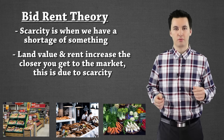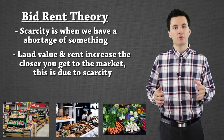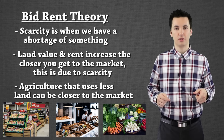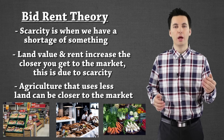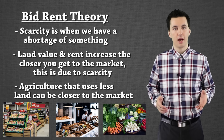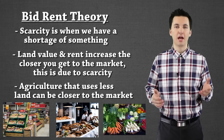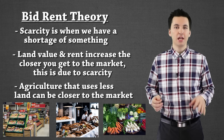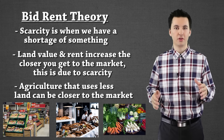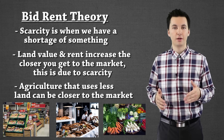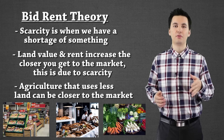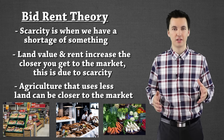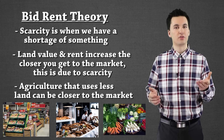Looking at that first ring of Von Thunen's model — dairy production — that doesn't require as much land, so they're able to buy more expensive land and save money on transportation. However, with the bid-rent theory, the farther away you go from the city, land value starts to go down and becomes cheaper as land becomes more available — there's more of it and less demand. Even if you connect this to rent within apartments: if you're trying to get an apartment in a downtown area, it's going to be pretty expensive. However, if you go to a suburb or even further into a rural area surrounding the main city, it's going to be pretty cheap. This illustrates the bid-rent theory.